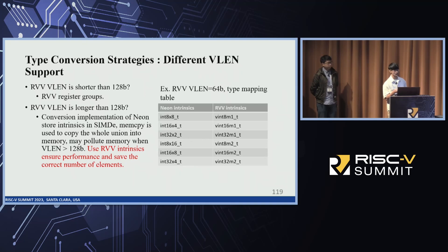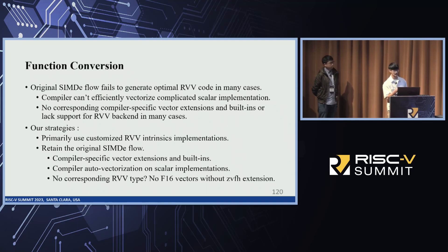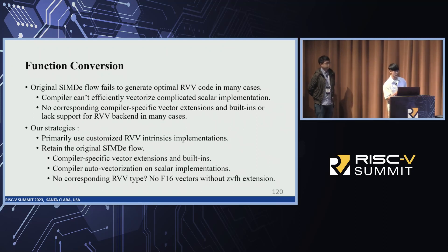For the store intrinsic conversion in SIMD Everywhere, memory copy is used to copy the whole union into memory, which may pollute the memory when VLEN is greater than 128. In this case, we use RVV intrinsics to ensure correctness and save the current number of elements. For example, we use RVV intrinsic store operations to replace the Neon intrinsics ST1, ST2, and ST3. For function conversion, the original scalar fallback to general compiler vectorization fails in many cases because the compiler cannot efficiently vectorize complex scalar implementations. Our strategy is to primarily use custom RVV intrinsic implementations, falling back to the original SIMD Everywhere flow based on the RVV configuration result.